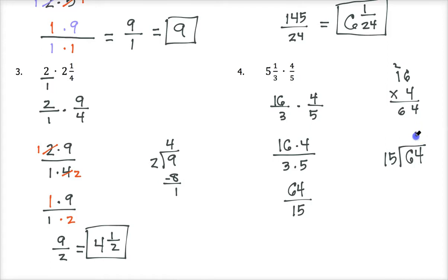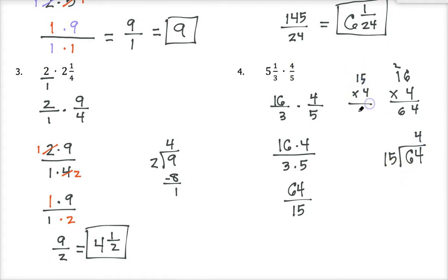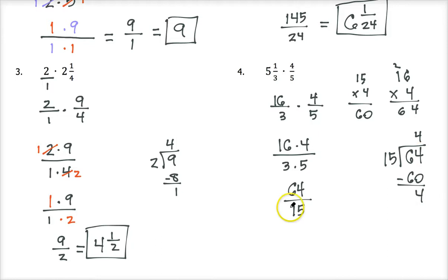We take sixty-four divided by fifteen. Fifteen will go into sixty-four four whole times. Fifteen times four is sixty, and we get a remainder of four, so this becomes the mixed number four and four fifteenths.